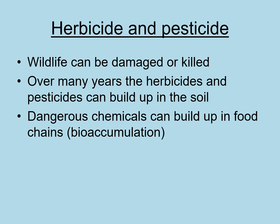In the first instance, when herbicides and pesticides are sprayed, the wildlife in the grass borders and hedgerows could be damaged or killed because some of that pesticide will leak out of the crop area, get sprayed accidentally, or get washed out by rain. Over many years, the herbicides and pesticides can build up in the soil — an accumulation of these chemicals — and as time goes by these dangerous chemicals can build up in the food chains. This is bioaccumulation.